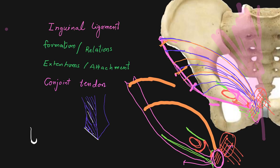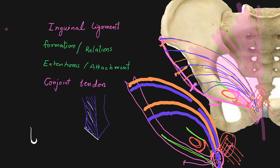The conjoint tendon fibers of the internal oblique and transverse abdominis pass deep and posterior to the superficial inguinal ring, anterior to the lateral crus, guarding the weak point of the superficial inguinal ring. The medial extension of the conjoint tendon is the rectus sheath, while laterally the fibers from the transverse abdominis continue downward to the superior ramus of the pubis, which is known as the inter-foveolar band.